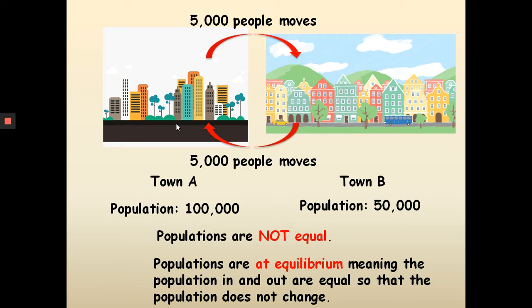Keep in mind: equilibrium has nothing to do with the total population of both towns — it has to do with the change. Because town A and town B are exchanging the equal amount of people, the population does not change over time. This is called equilibrium.